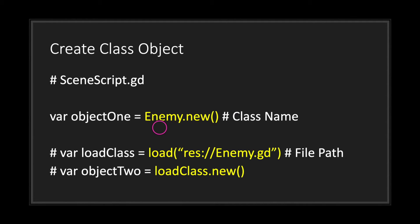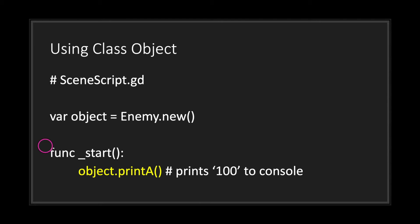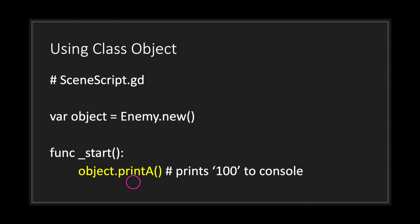The choice is yours — I personally like to keep my code clean, so I use the class_name keyword and write one line of code instead of two. To use a class object, simply use the variable name of your instance object followed by the function name or member variable name using dot notation. Remember to omit the parentheses when accessing member variables.